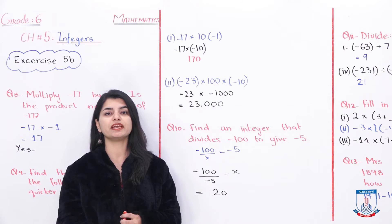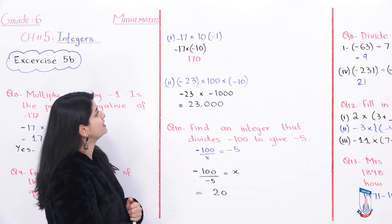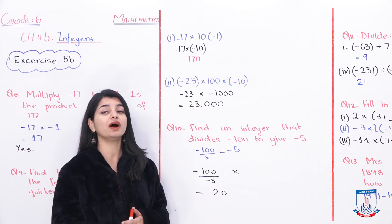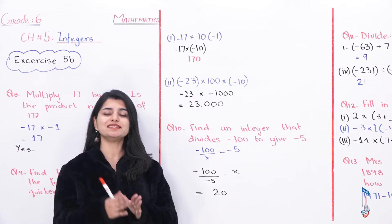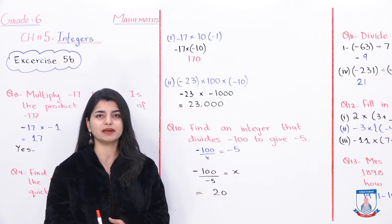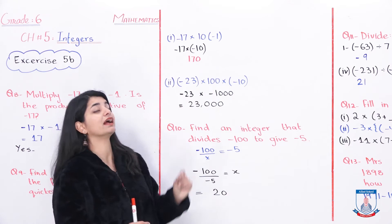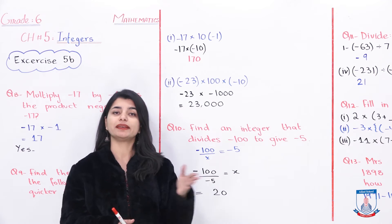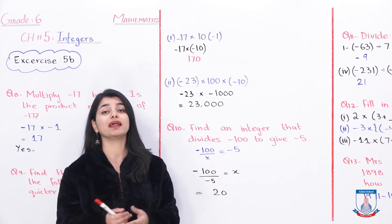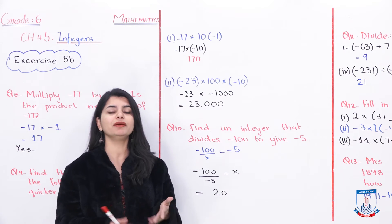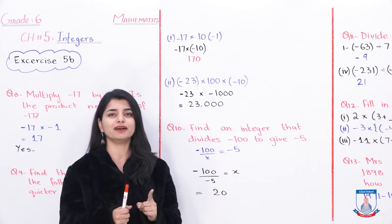We have to do multiplication. Let's look at the first part: minus 17 multiplied by 10 into negative 1. First, we open the brackets. 10 is multiplied by minus 1. 10 is positive, minus 1 is negative — different signs — so the answer comes out negative. 10 multiply by 1 is 10, and the sign will be negative.